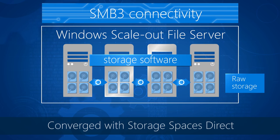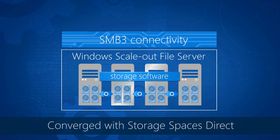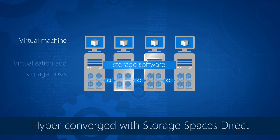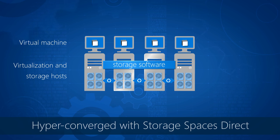Is this converged architecture the only deployment option? No, there are actually two ways to deploy it. We have the converged architecture, and we can also do hyper-converged. That's part of the power and flexibility of Storage Spaces Direct — we can actually collapse the compute and storage layer into one, with compute and storage running on the same set of nodes. So to clarify, each physical server has Hyper-V and Spaces Direct configured on it. That's correct.